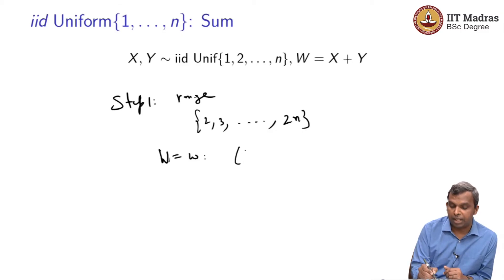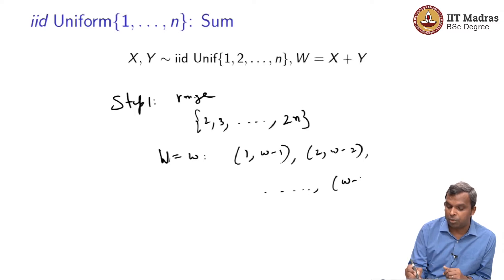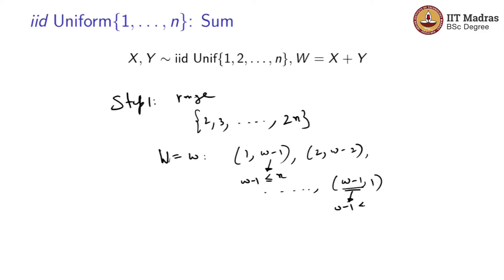Now for each possibility, supposing I say W equals w, what are the various possibilities? It can be 1 comma w minus 1, 2 comma w minus 2, and so on. It looks like it can go all the way till w minus 1 comma 1. Now what is the issue here? The main issue is w minus 1 has to be less than or equal to n. W minus 1 has to be less than or equal to n for all of these things to count.